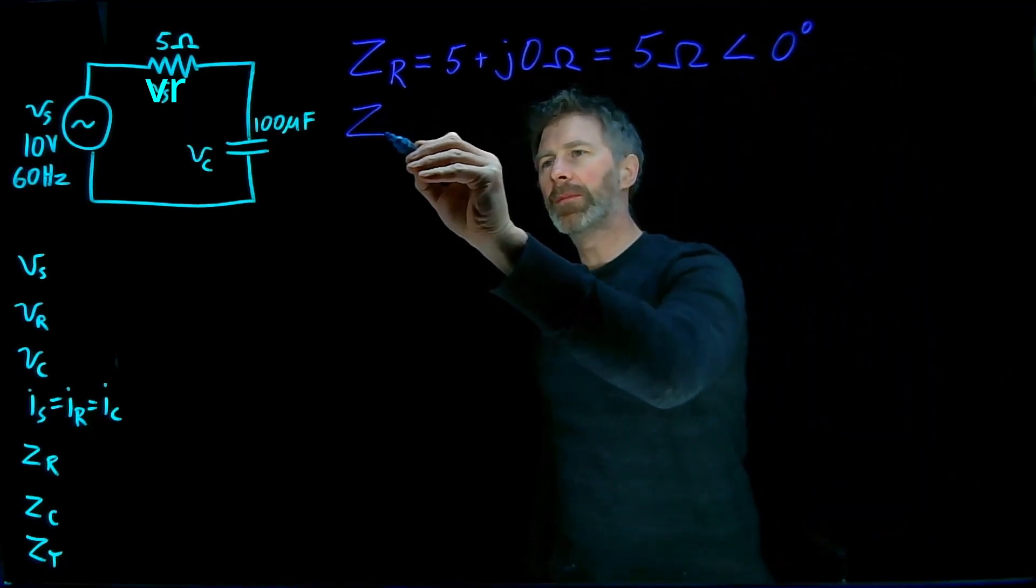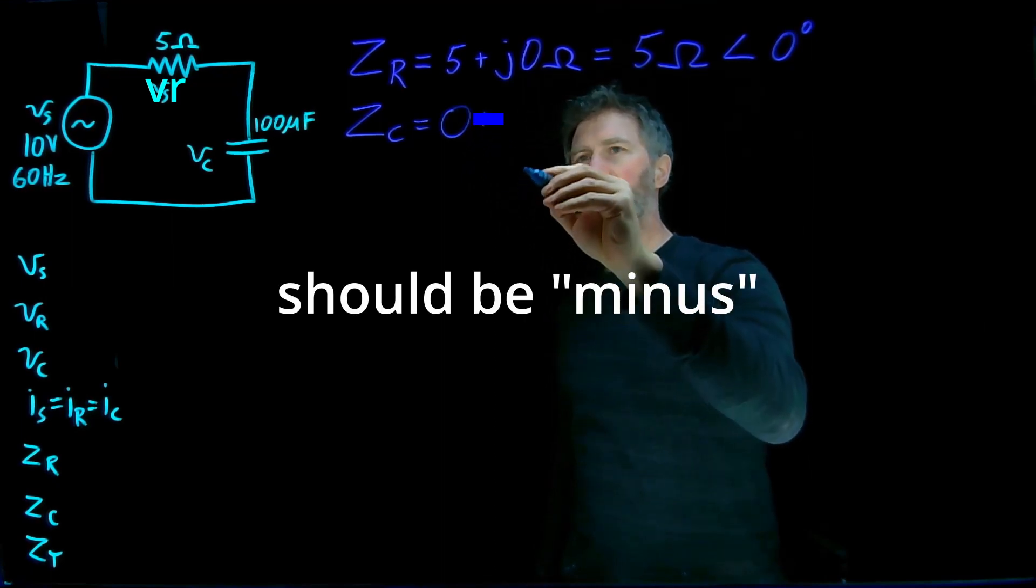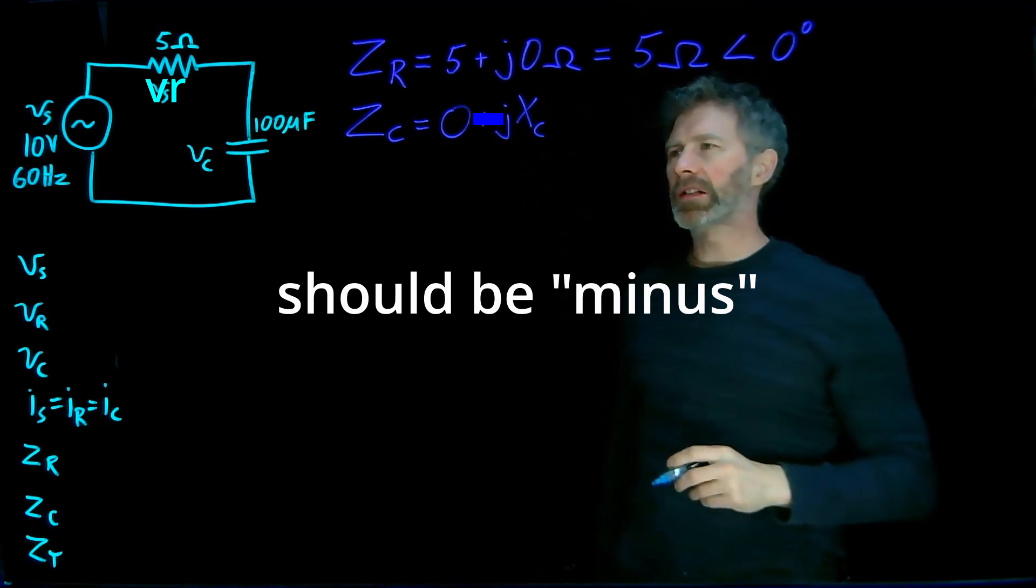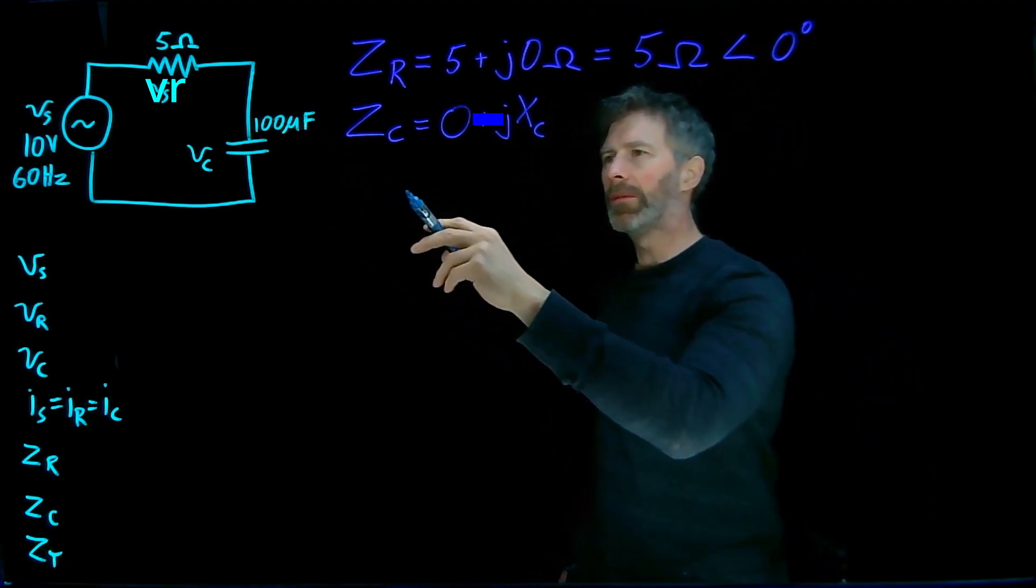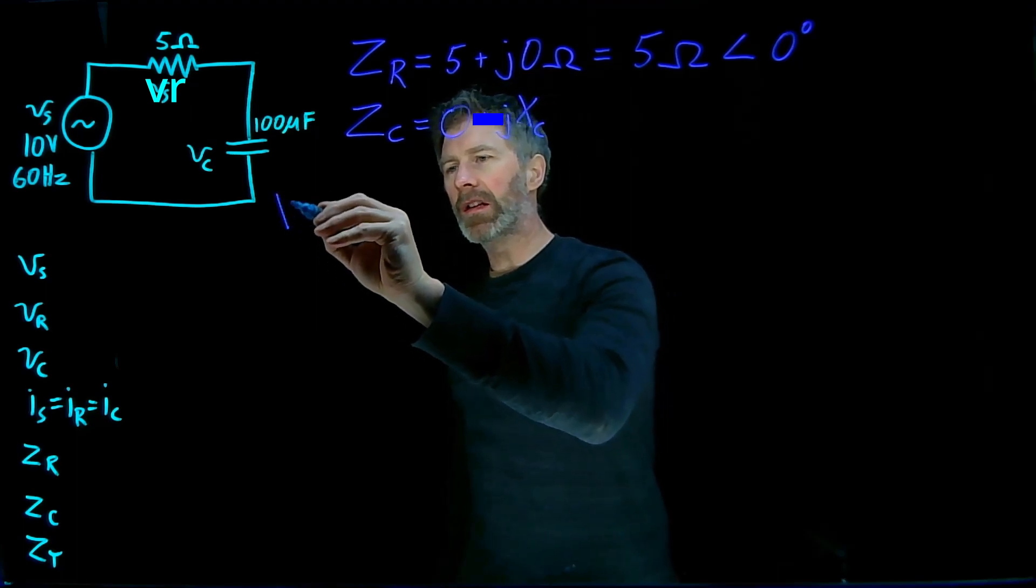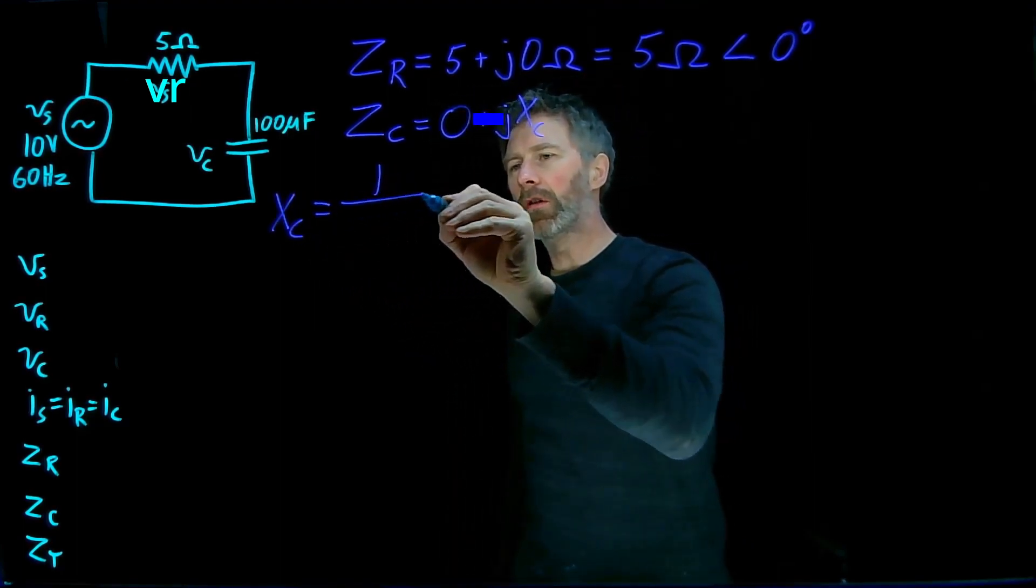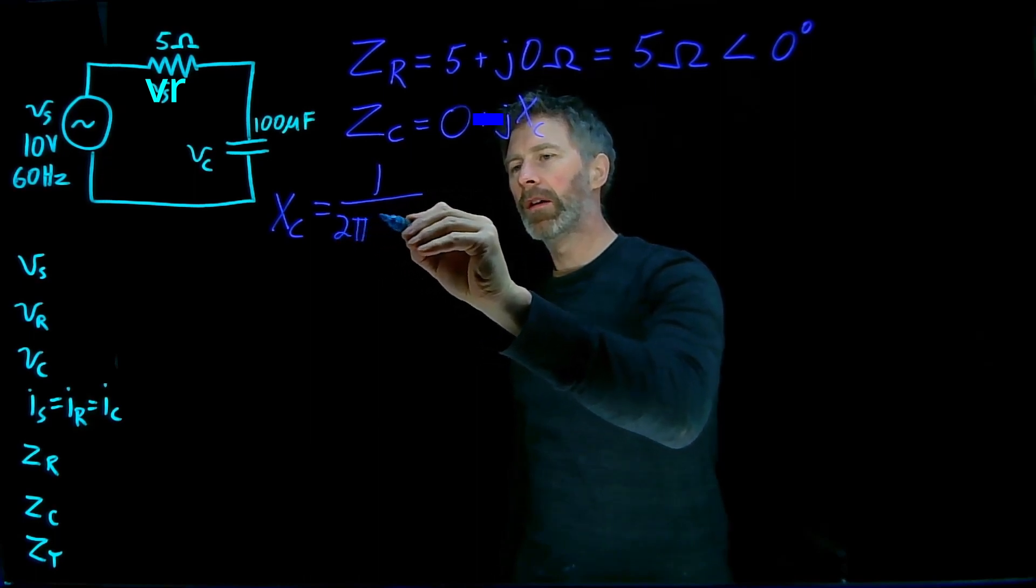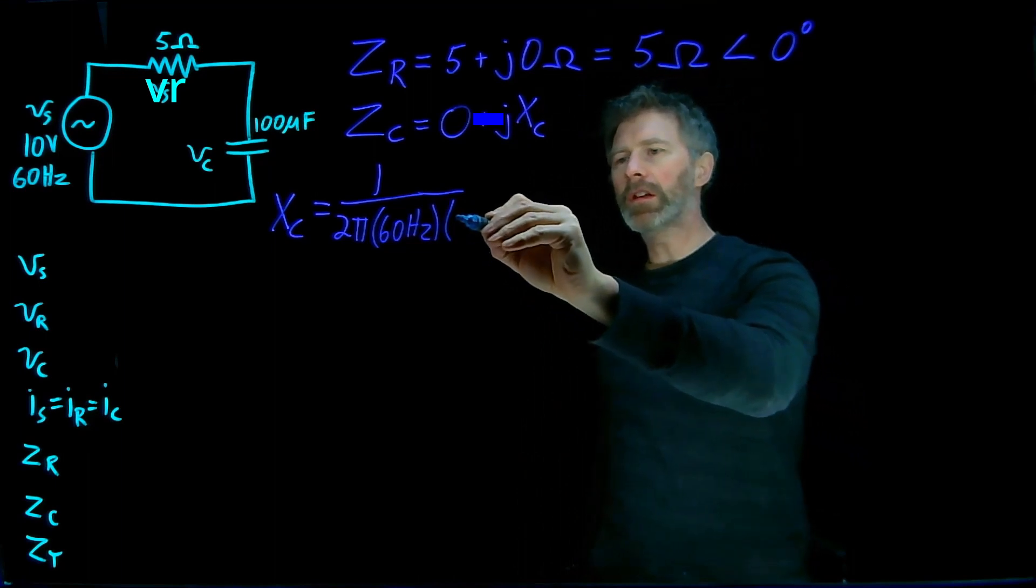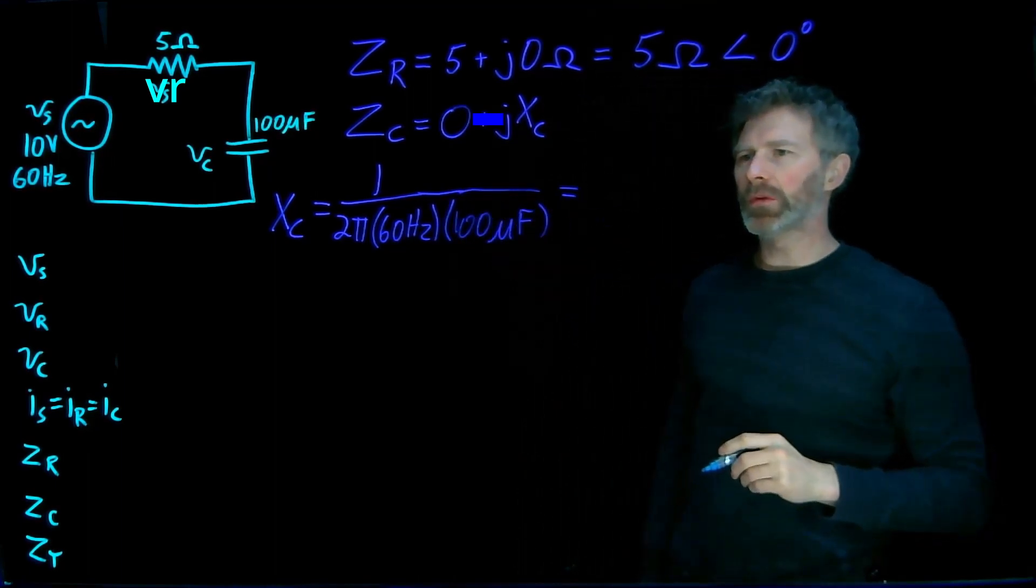For the capacitor, also very easy. There is no real part, it's all imaginary. The imaginary part equals the reactance, which is based on the capacitance as well as the frequency. So that Xc, that reactance of the capacitor, equals one over two pi times the frequency times the capacitance.